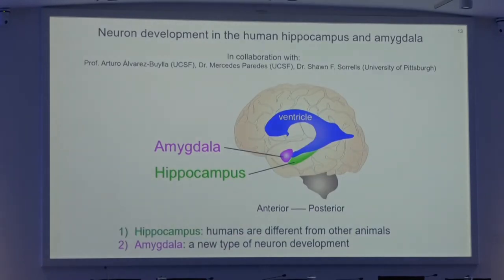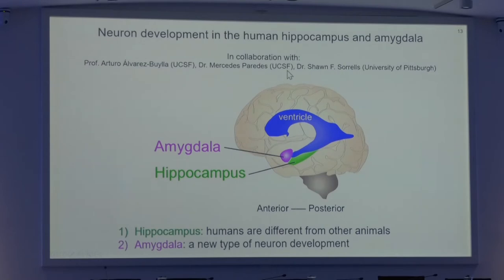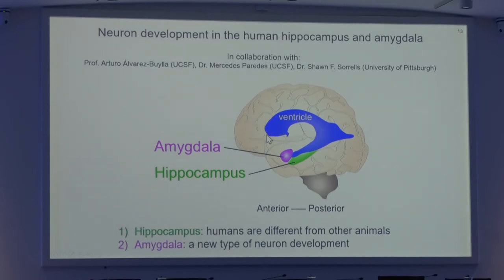Finally, I will speak very briefly about the development of the human temporal lobe. This project is the result of a long collaboration with the group of Arturo Alvarez-Buylla at UCSF, and his former postdocs Mercedes Paredes and Sean Sorrells, who are now running their own labs. In our analysis, we focused on the study of the dentate gyrus in the hippocampus and the amygdala, both in the temporal lobe. Our data suggests that the development of these two structures seems to be slightly different in the human brain compared to other species.